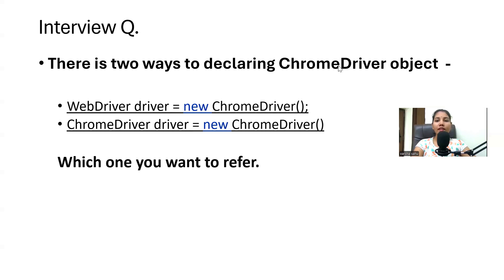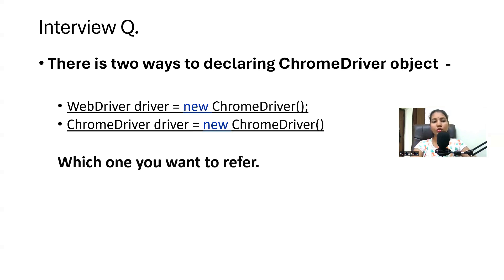The question is: there are two ways to declare a ChromeDriver object. The first is `WebDriver driver = new ChromeDriver()` and the second is `ChromeDriver driver = new ChromeDriver()`. So which one do you want to refer to?